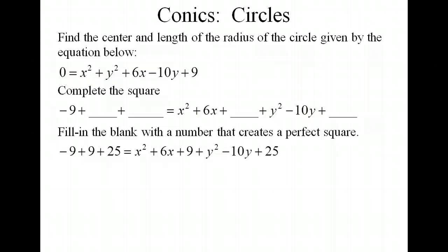And now we're going to factor and combine our constants. So on the left side, we've got 25. The x² + 6x + 9 factored into (x + 3)². And the y values, y² - 10y + 25, came out to (y - 5)².